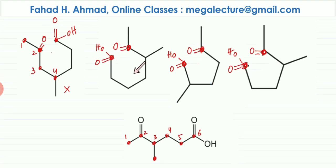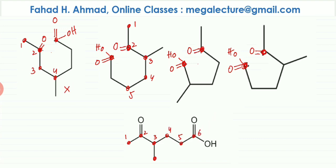For option B, counting from the ketone side: C1, C2, C3 — the third carbon has a branch, which matches. Then C4, C5 — but the sixth carbon atom does not have a carboxylic acid group, so option B's structure is different and is also eliminated.